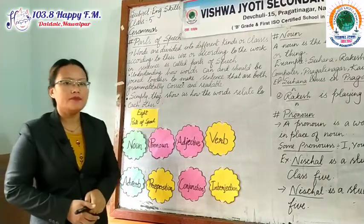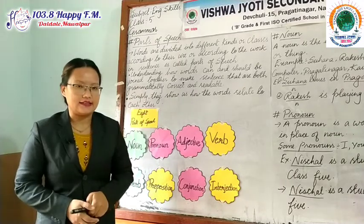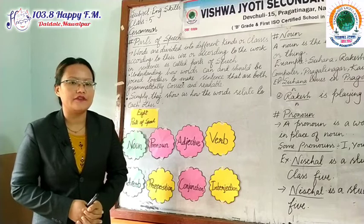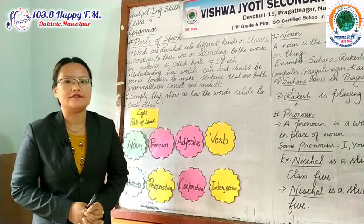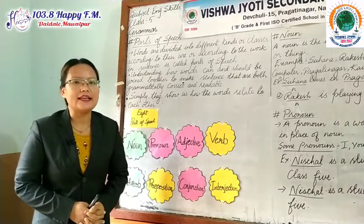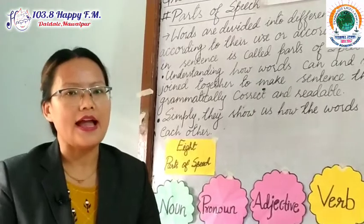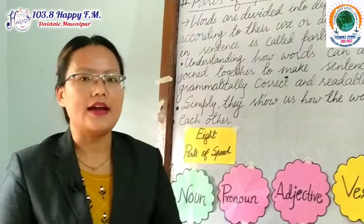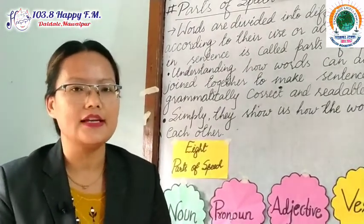In our previous lesson, we have discussed about sentence. I hope that you know what a sentence is. Let's do a revision for a bit. A sentence is a group of words which gives us a complete sense. The sentence must deliver a message of what it wants to tell. You have learned that there are four kinds of sentence. They are assertive, interrogative, imperative, and exclamatory sentence.